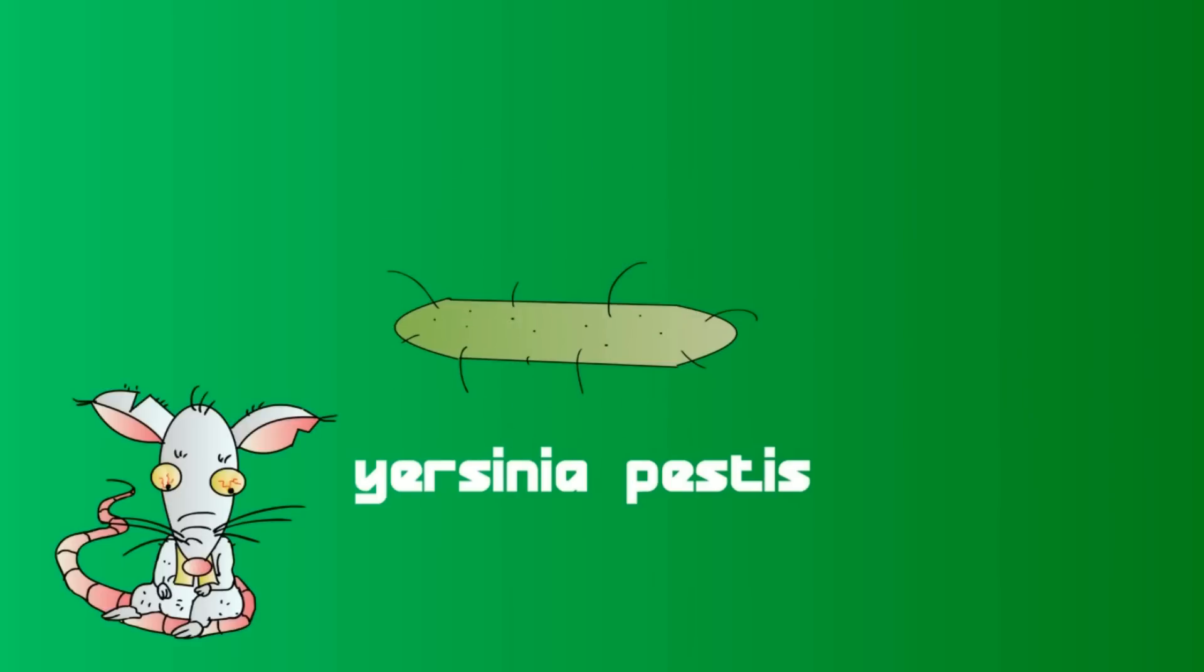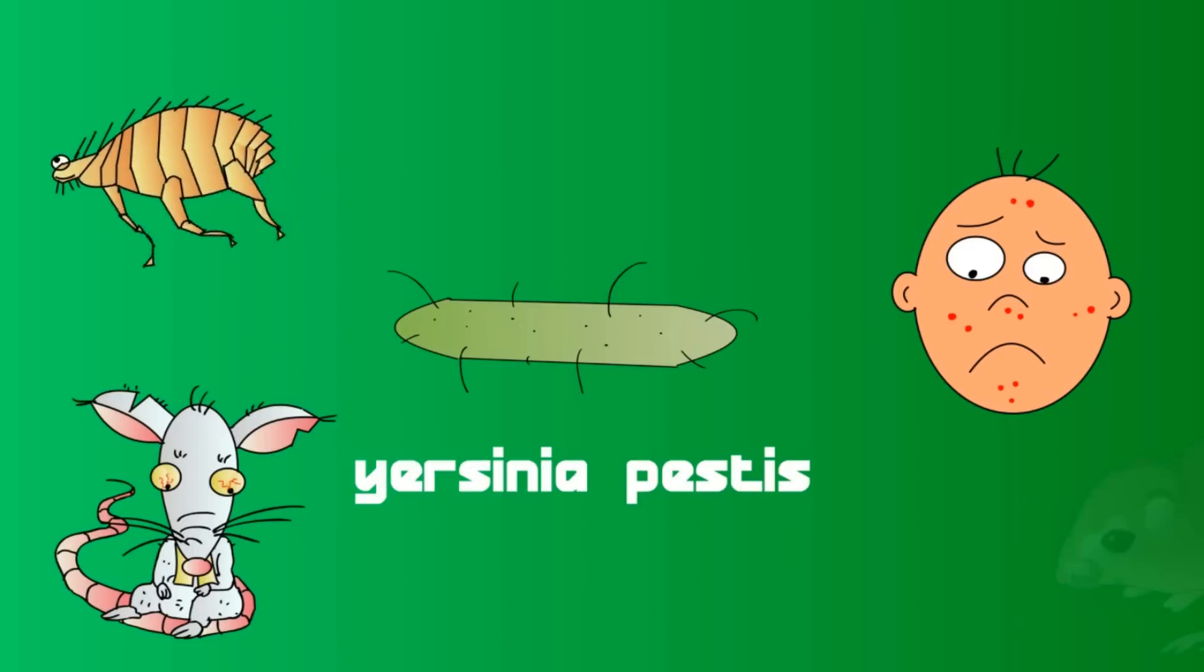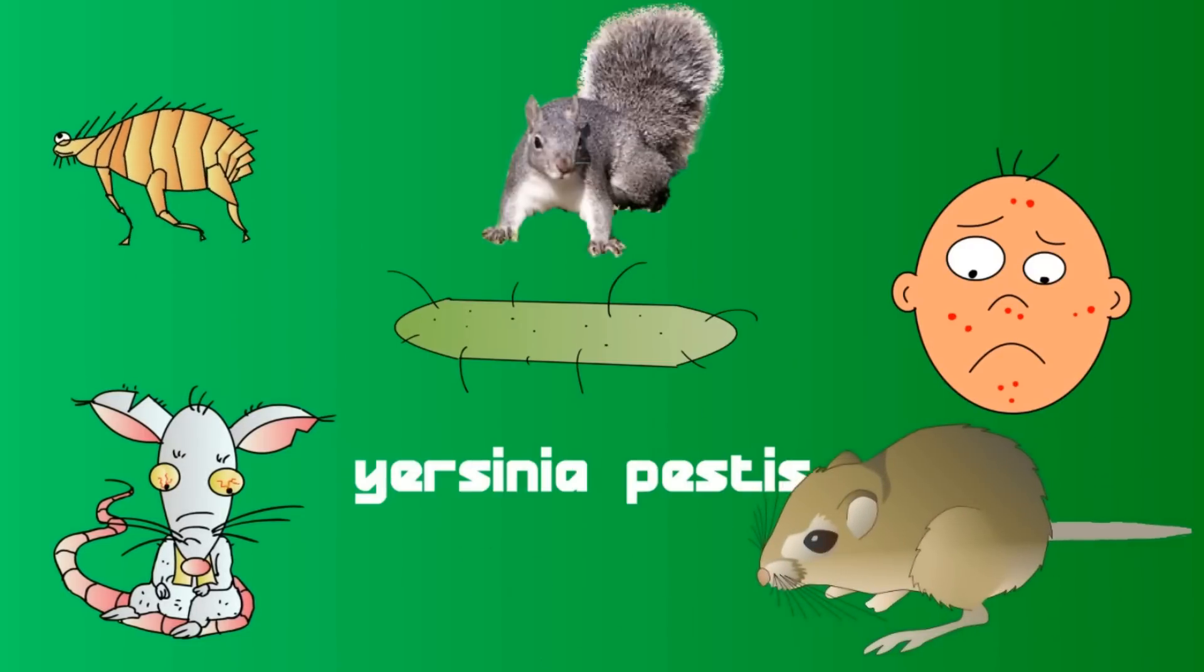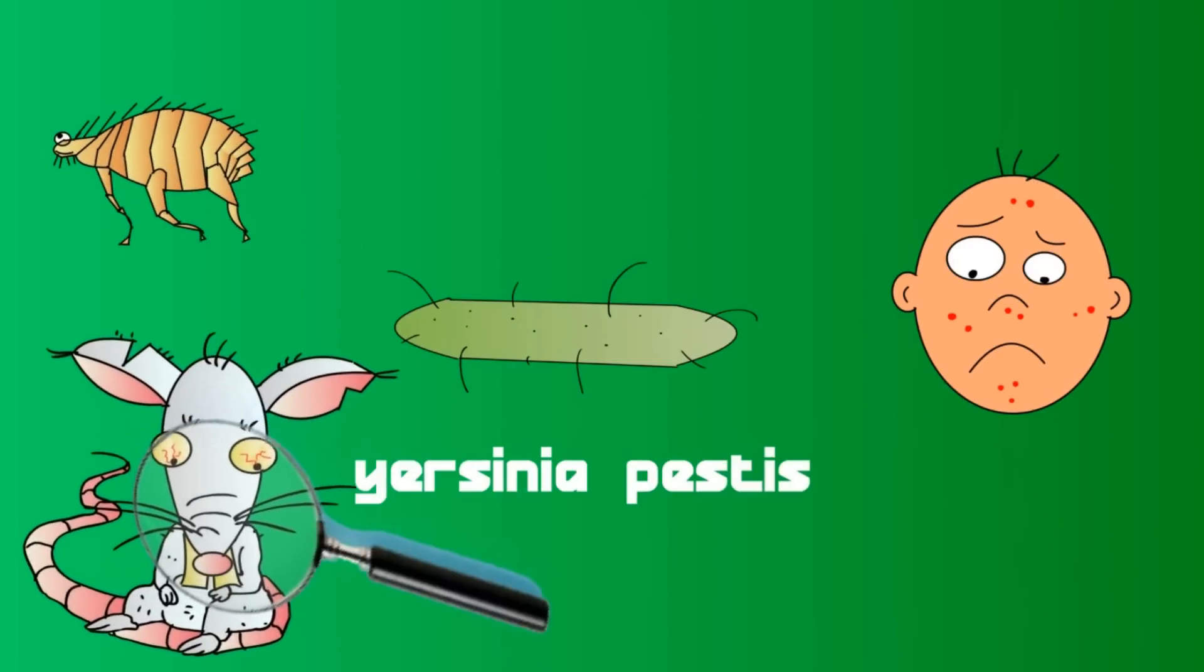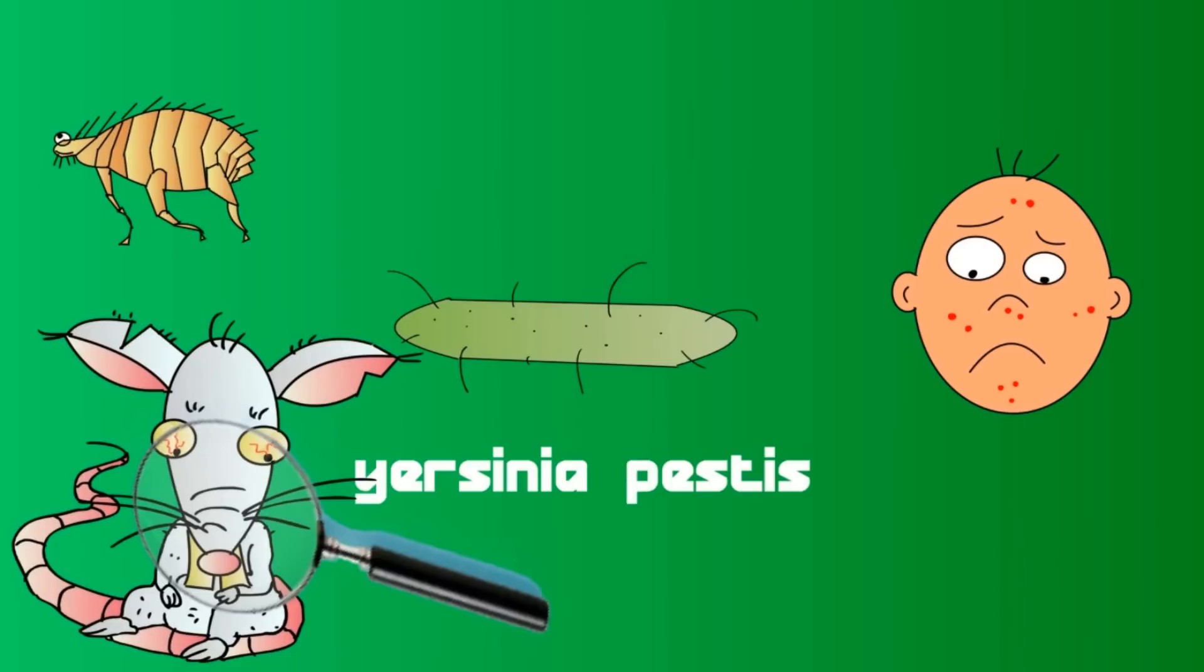So what is the Black Death? It's caused by a bacteria, Yersinia pestis. The bacteria is carried mostly by rats and spread to humans through flea bites. Asian gerbils and other rodents may have also had something to do with the plague, though the research done on it so far hasn't exonerated the rats in any way.